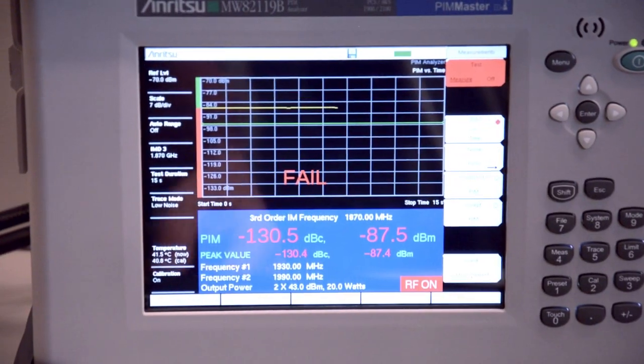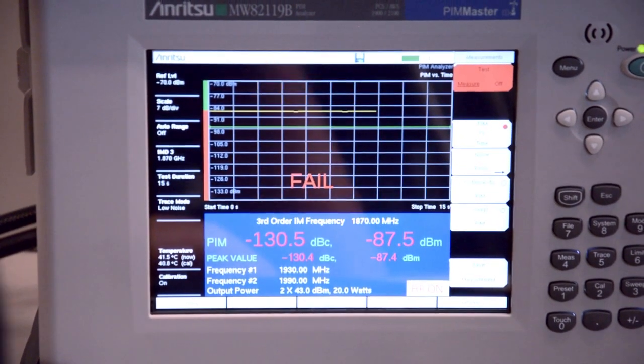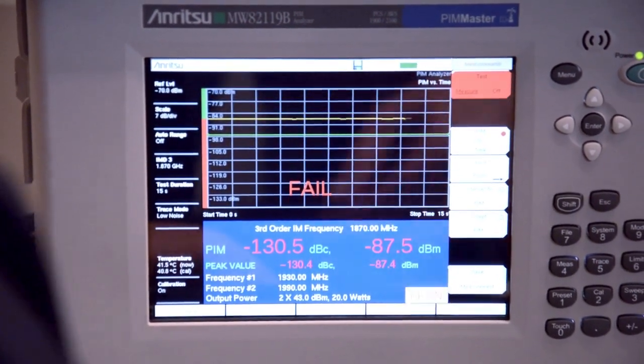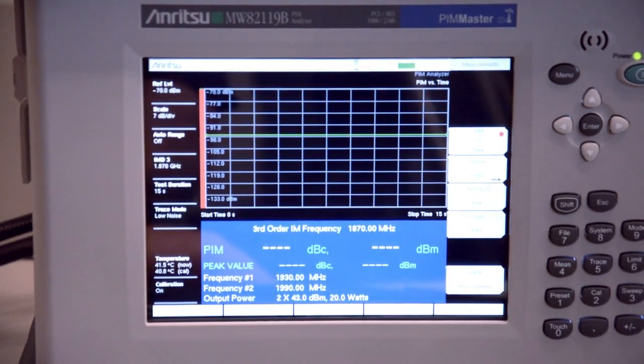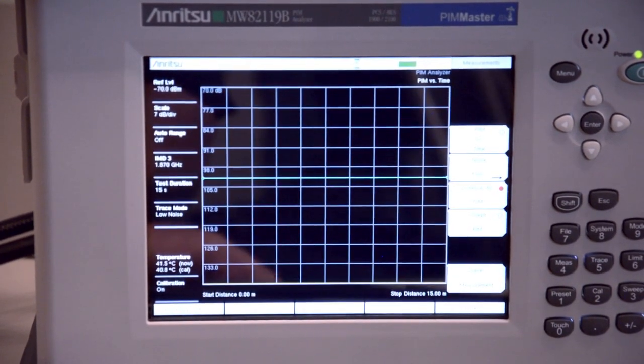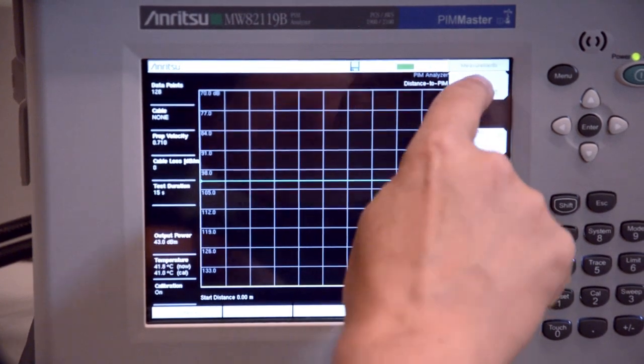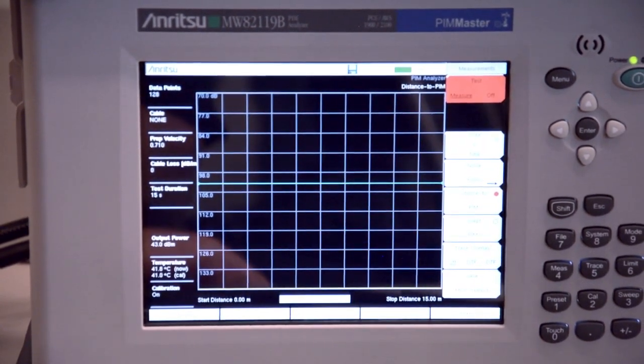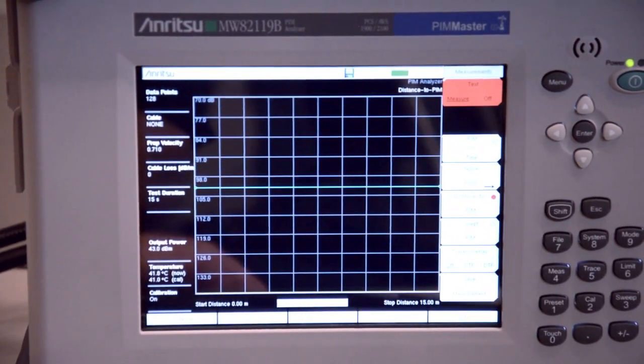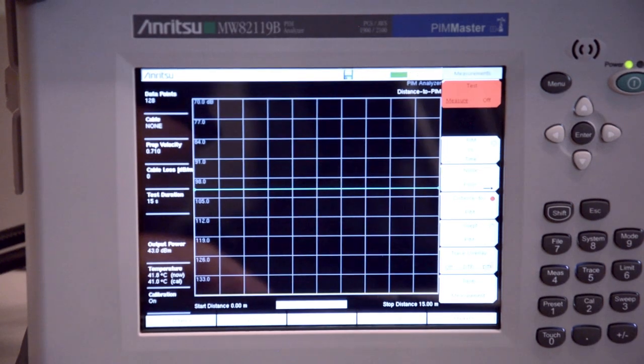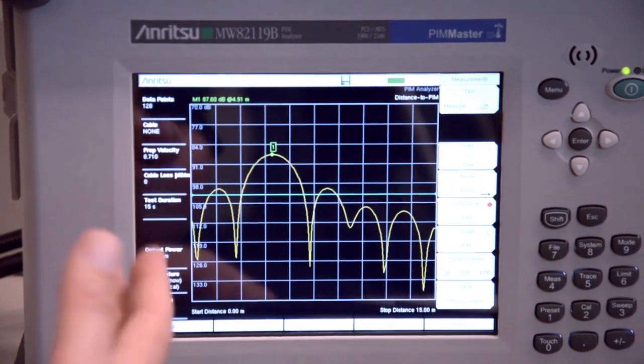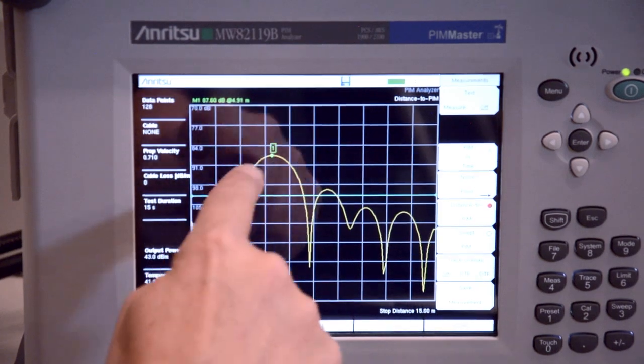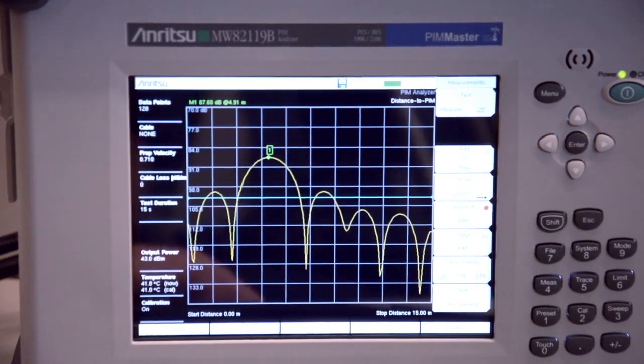As you can see here, I don't have any indication where it is, but with distance to PIM technology, with a single button push, we can now go into a mode that tells us the location of where the PIM problem is located. So with just a few seconds we have an answer, and in this case it's telling me that I see a high PIM peak at a distance of 4.91 meters.